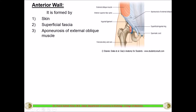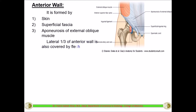Deep to the superficial fascia is the external oblique muscle, which mostly converts itself into an aponeurosis, runs downwards, and twists on itself. Most of the aponeurosis forms the canal deep inside. The lateral one-third of the anterior wall is also covered by the internal oblique muscle, as the internal oblique takes origin from the inguinal ligament itself, and those fibers form the anterior wall in the lateral one-third.